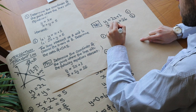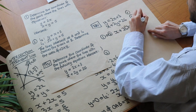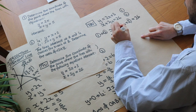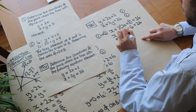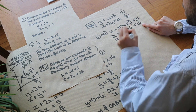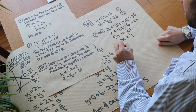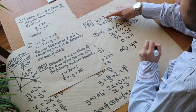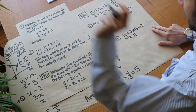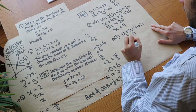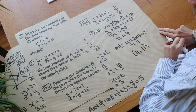Substituting: x plus 2 times (2x plus 3) equals 26. Expanding: x plus 4x plus 6 equals 26, so 5x equals 20, giving x equals 4. Substituting back into equation 1: y equals 2 times 4 plus 3, which is 8 plus 3, equals 11. Therefore, the point of intersection is (4, 11). Well done if you got that right.